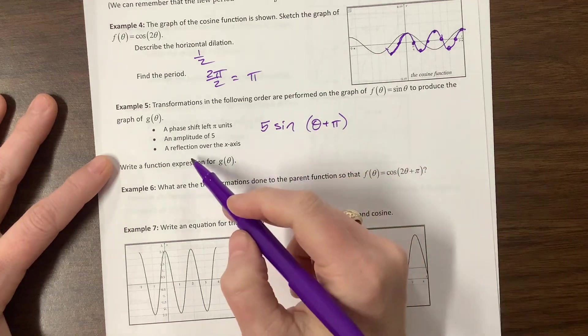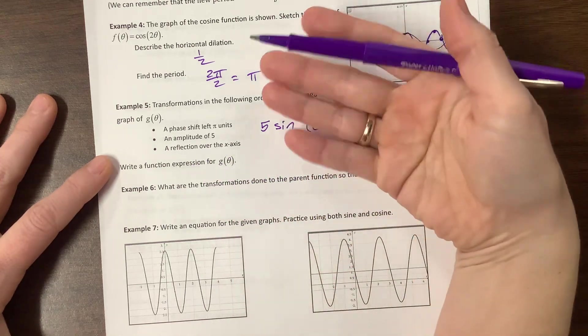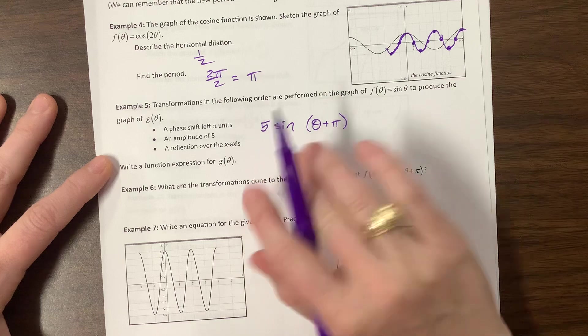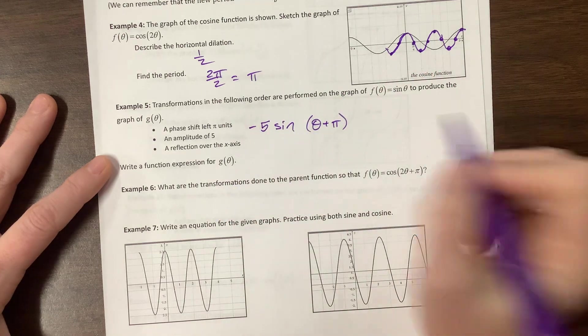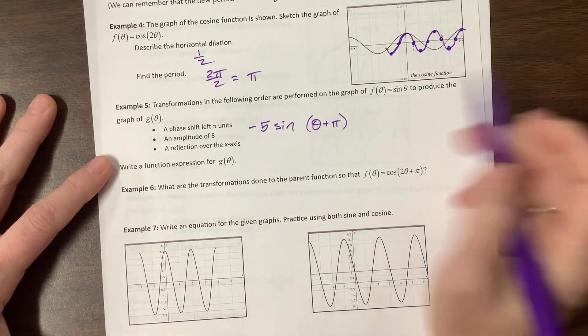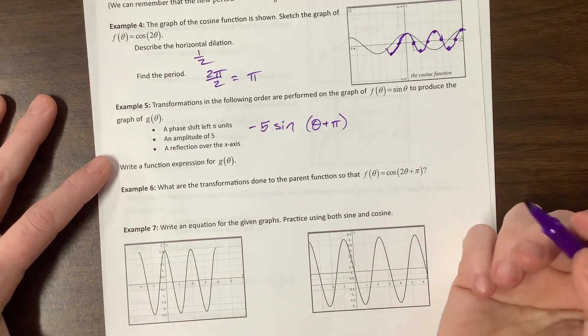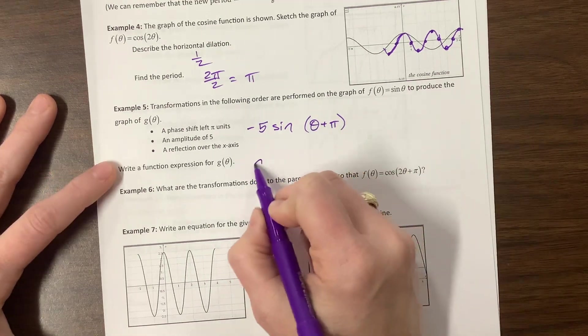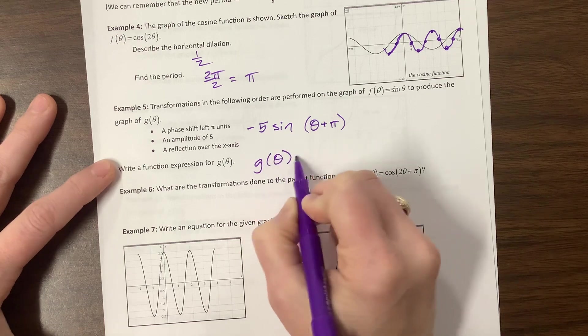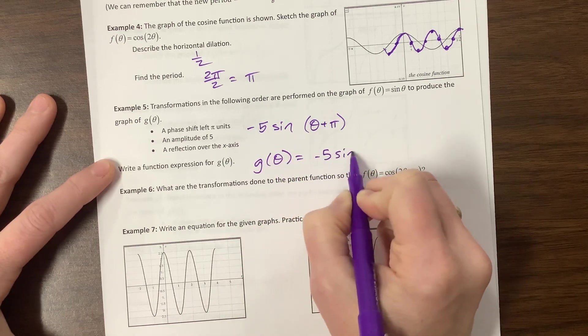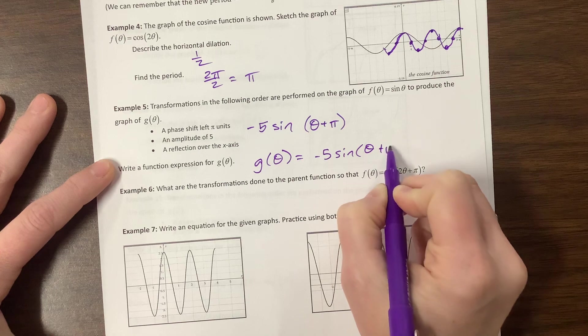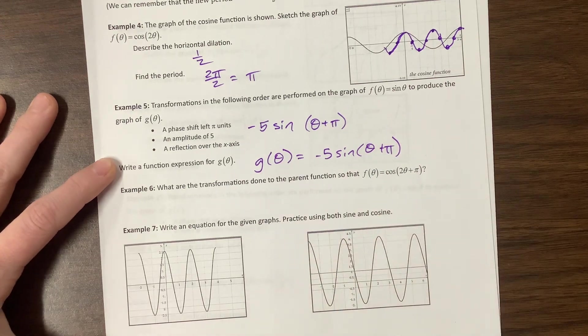And then a reflection over the x-axis. So if we're going to reflect it over the x-axis, then we put our negative out in front, and then there's no other shifts or anything. I left space in case there was a b value, but it's just 1, so we don't need that. So maybe the best way to write this: g of theta is equal to negative 5 sine of theta plus pi.